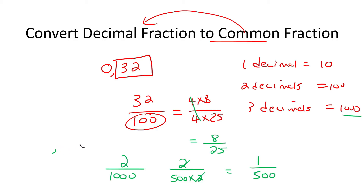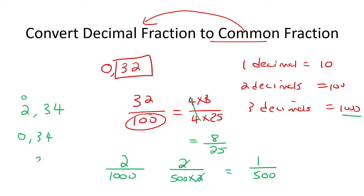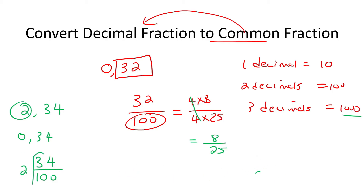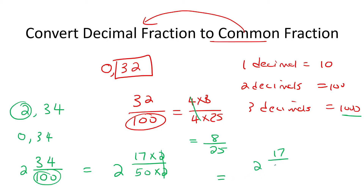Let's do one more just so you know. When they give you a number in front, trust me the method I'm going to show you is the easiest. Just leave that number — don't even look at it. Just pretend that it was a zero. So you would imagine 0.34: there would be two decimals, so that would be 34 over 100. Then just take that number two and put it there as a mixed fraction. Then don't forget to simplify. I know that 34 could be written as 17 multiplied by two, and 100 as 50 multiplied by two, so the twos cancel, and you'd be left with two and 17 over 50.